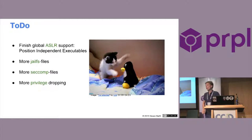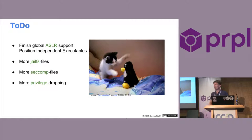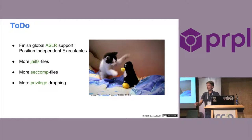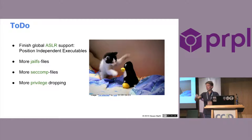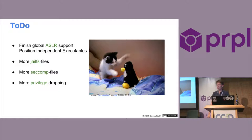Why is position-independent executables necessary? If you have an exploit, most exploits rely on being able to call some functions anywhere or assemble exploit code from code anywhere in memory. The point of address space layout randomization is that the code and functions aren't at fixed positions. Libraries are already relocated randomly at startup because they're relocatable code, but the executables aren't relocatable, so they have fixed addresses. This is to get rid of that fixed-address problem.